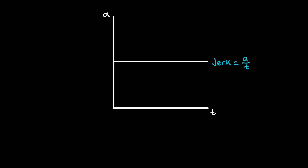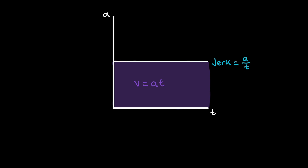The final graph is the acceleration versus time graph, in which the slope is jerk — which is acceleration over time — and the area gives us velocity, as seen when differentiating the equation acceleration equals velocity over time.